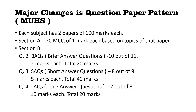All subjects are divided into paper one and paper two. Each paper is of 100 marks and will be given for three hours. Section A contains 20 MCQs of one mark each, based on topics of that paper. Section B contains BAQs — brief answer questions — of two marks each, and there will be 10 out of 11 questions, carrying 20 marks. Question 3 contains SAQs — short answer questions — you have to solve 8 out of 9, carrying 5 marks each, total 40 marks. Question 4 contains LAQs — long answer questions — 2 out of 3, carrying 10 marks each, total 20 marks. This is a general idea about the question paper.